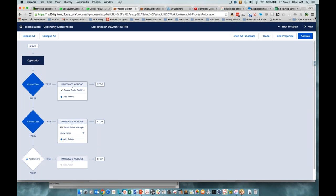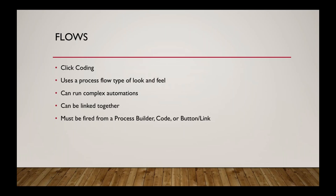We're running a little bit short on time, so we're going to very quickly talk about flows. Flows are a little more complex — they're basically quick coding. If you've ever done a flowchart, you can do flows. They can run very complex automations and can be linked together. They have to be fired from either a Process Builder, code, or a button or link. Flows allow you to do very customized development without getting into code. Most admins can do flows, though on very complex situations they can be harder to maintain than simpler automation tools.